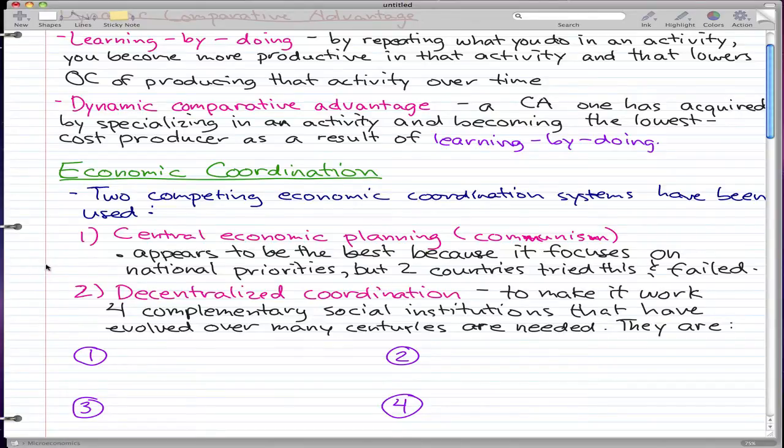The second one is decentralized coordination. To make decentralized coordination work, we need four complementary social institutions that have evolved over many centuries.